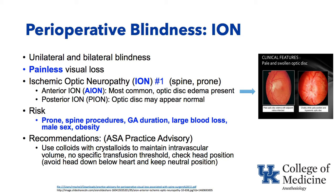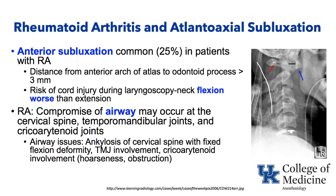Rheumatoid arthritis and atlanto-axial subluxation is a concern in patients with rheumatoid arthritis as well as Down syndrome. Anterior subluxation is quite common in RA, with risk of cord injury during laryngoscopy. Moving the neck in flexion or extension can worsen the subluxation — flexion appears worse in most cases. Rheumatoid arthritis can also compromise the airway by reducing cervical spine mobility, temporomandibular joint mobility, and cricoarytenoid joint mobility, so considerable time should be spent evaluating the airway and considering awake fiberoptic intubation or having a GlideScope available.